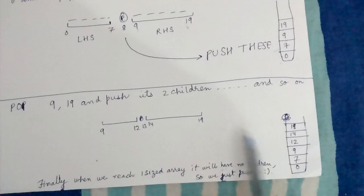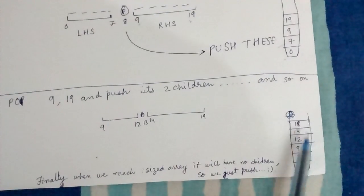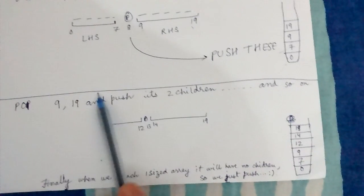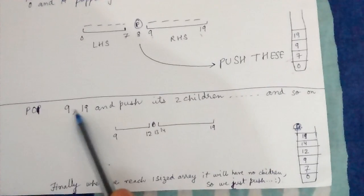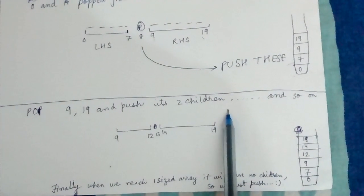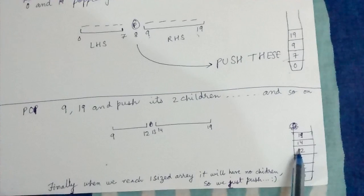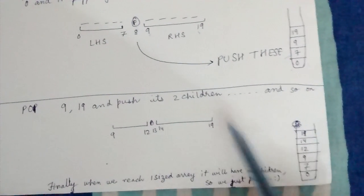So as soon as we pop 9, 19, we push its two children: 9, 12 and 14, 19. This way we keep on popping and pushing their children.